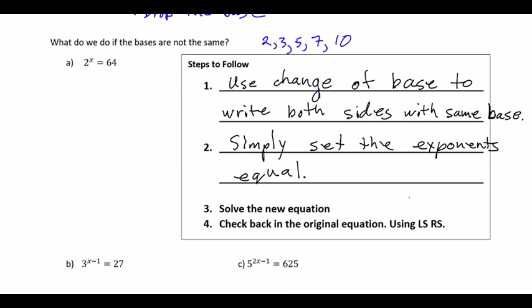Our current problem has 2 to the x is equal to 64. The big hint here is 2 to the x — that's one of our regular bases — so we're going to replace 64 on the right side. We write 2 to the x is equal to 2 to the 6, because 2 to the 6 is equal to 64. Now that the bases are equal and nothing is impeding our progress, we drop the base: x is equal to 6. And there is our final answer.